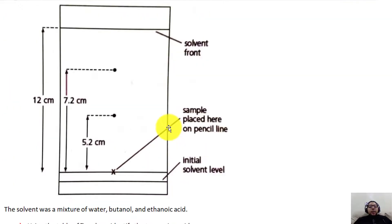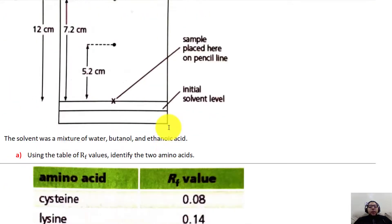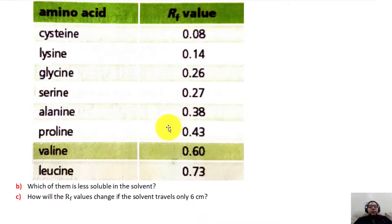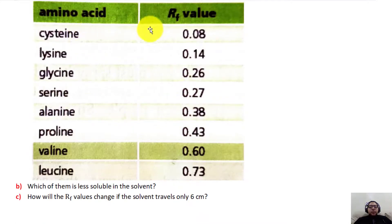These are the Rf values for some amino acid substances, and as you can see all of them are found below one, which confirms that the solvent always travels the farthest.